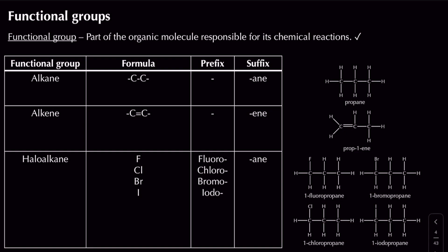We can assign different compounds to different categories called homologous series, and each homologous series has a functional group that defines it. An alkane contains simple carbon-carbon single bonds. Alkenes contain the carbon-carbon double bond. Haloalkanes contain a halogen: a fluoroalkane contains fluorine, a chloroalkane contains chlorine, a bromoalkane contains bromine, and an iodoalkane contains iodine.